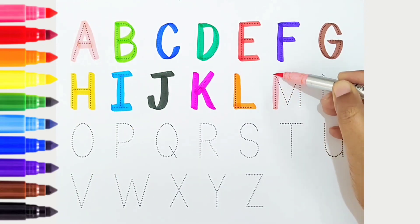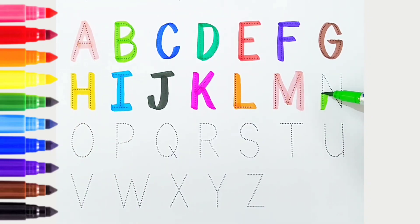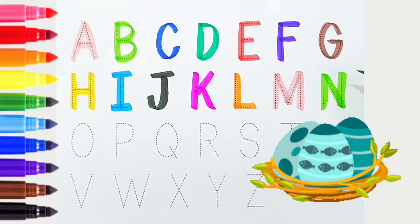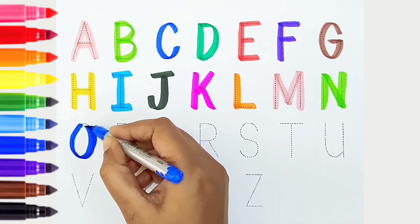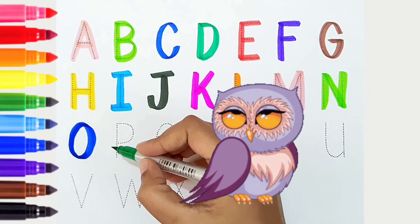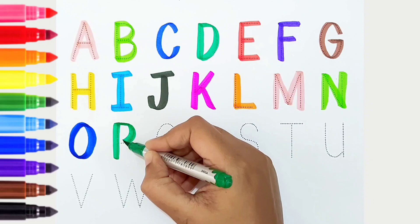M, light pink color, is for monkey. N, light green color, is for nest. O, dark blue color, is for owl. P, dark green color, is for pen.